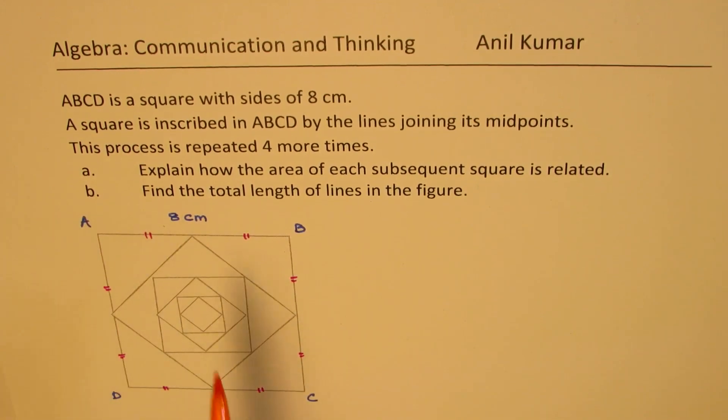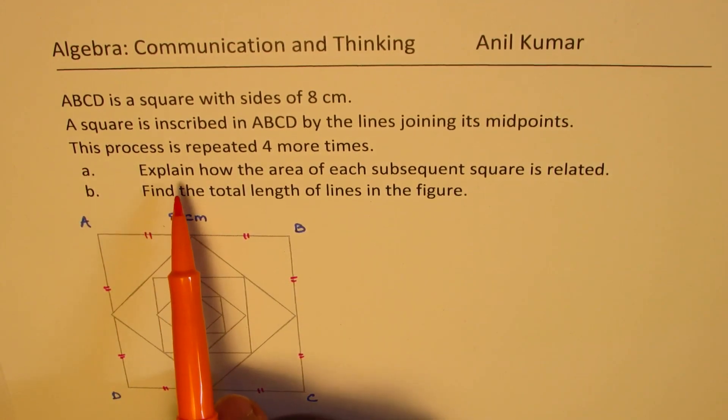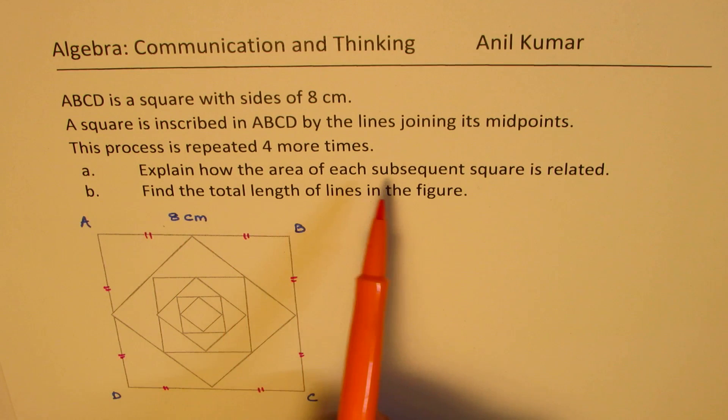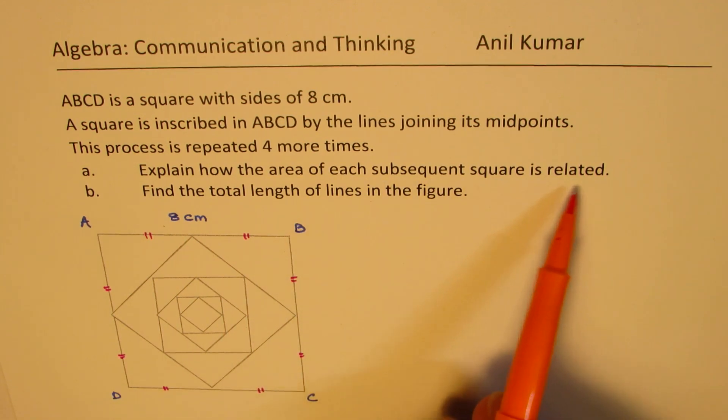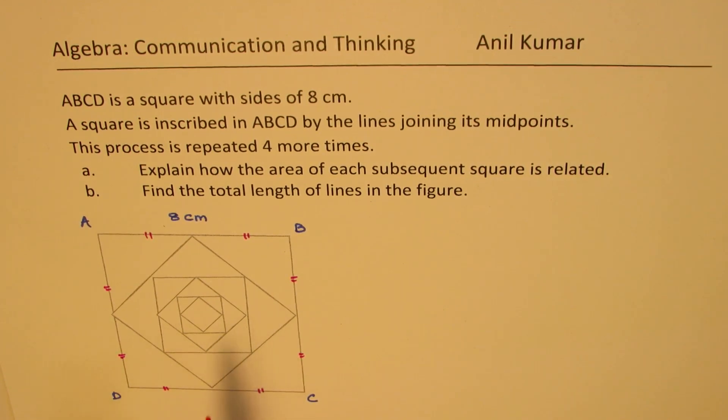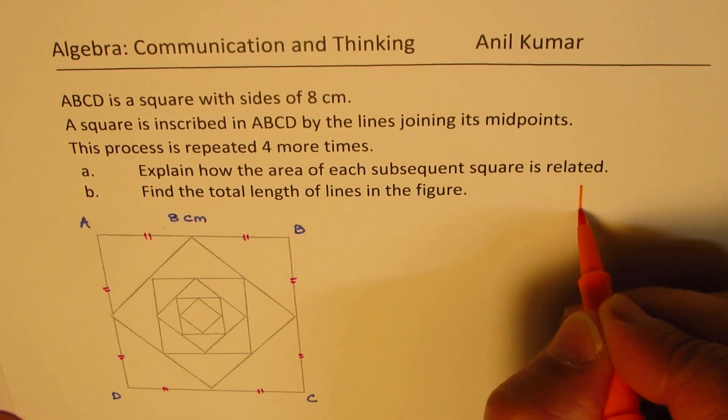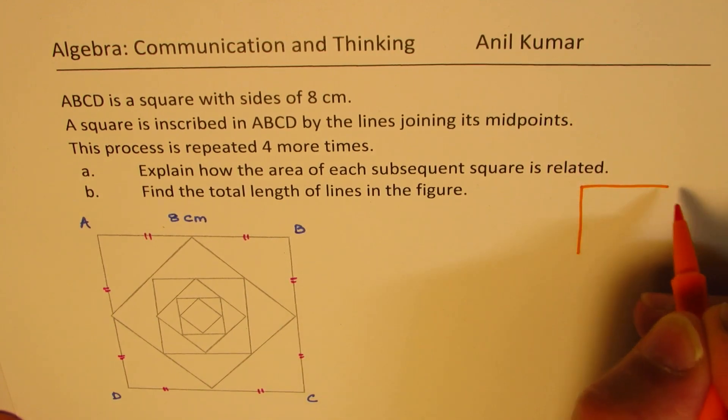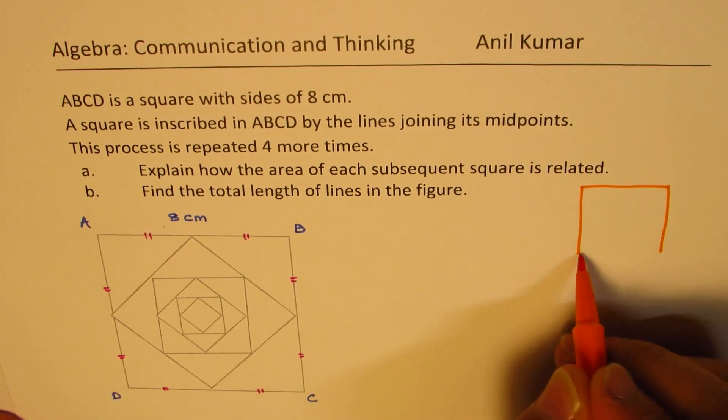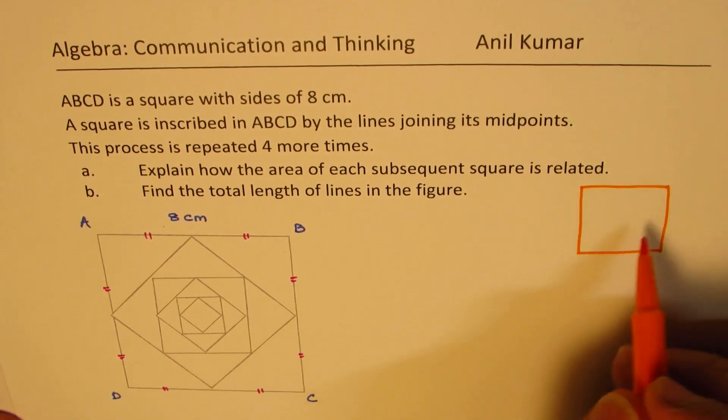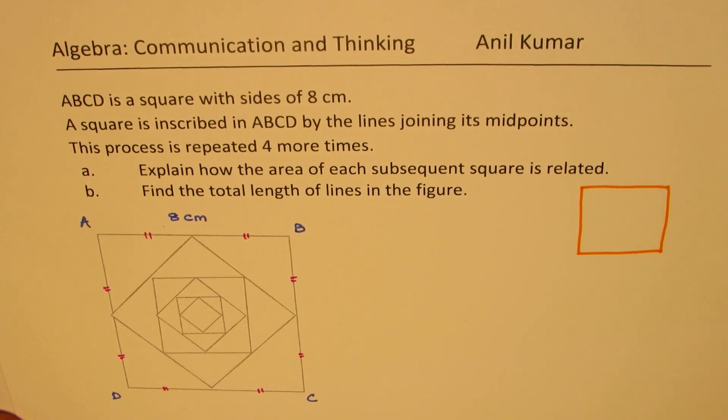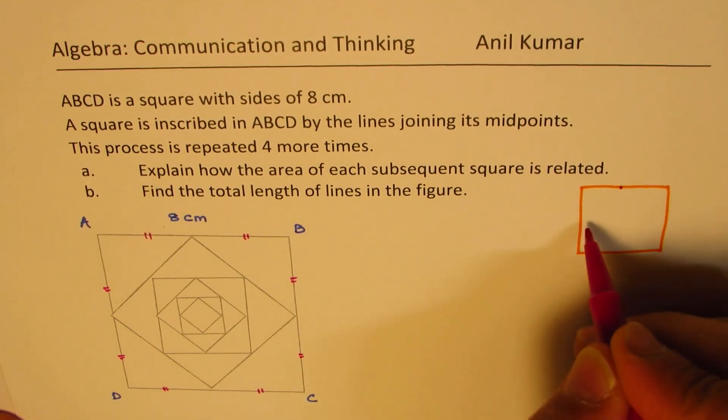Now there are two parts to this question. First is explain how the area of each subsequent square is related. What we are trying to show is that there is a relation between each square. And this is how we can actually find the relation. Let me do it on a separate figure. Let's say we start with a square something like this. We join the midpoints.